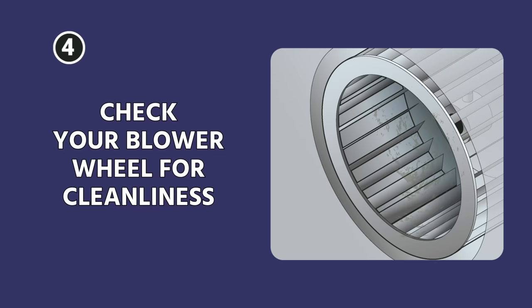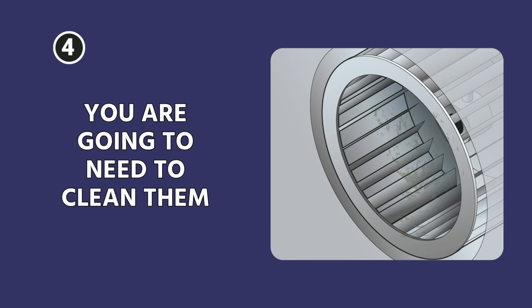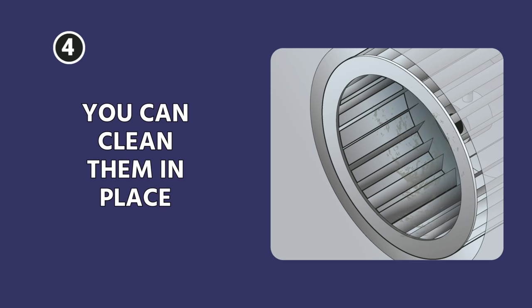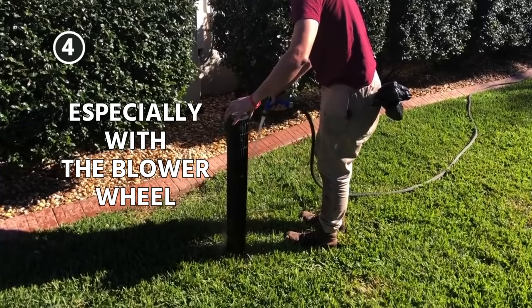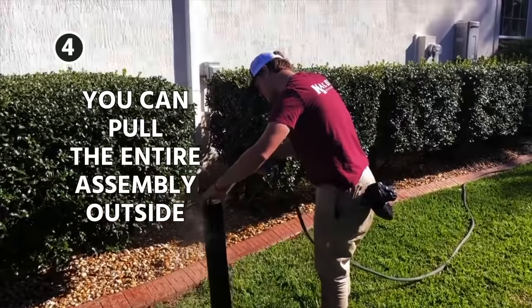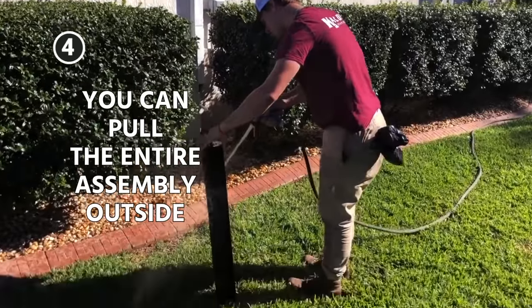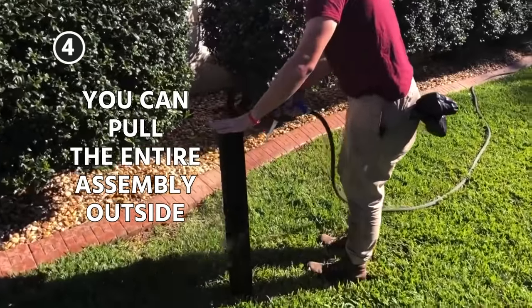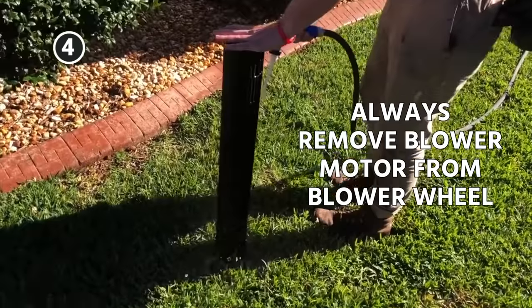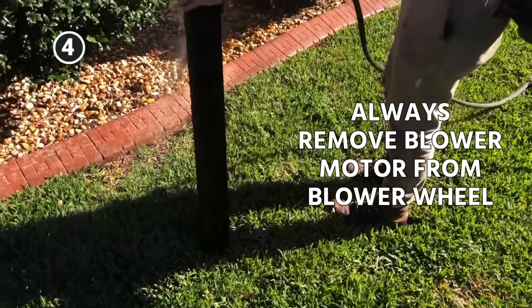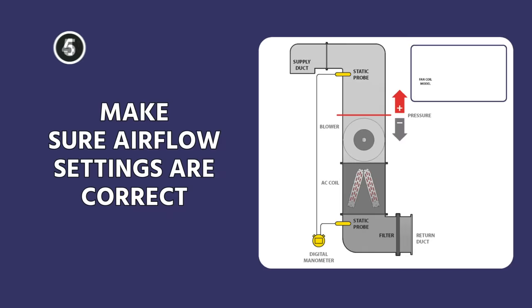Next step: check your blower wheel for cleanliness. In both of these cases, if they are dirty, you're going to need to clean them. If you can clean them in place, great, but in many cases you're going to have to pull them outside. Especially with the blower wheel, you can pull the entire assembly outside and wash it out in the yard. Always remove the blower motor from the blower wheel before you attempt to clean it.